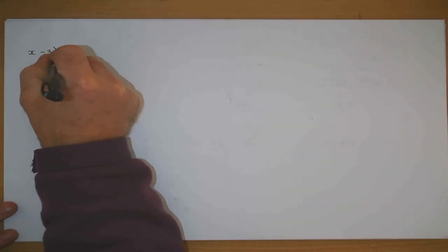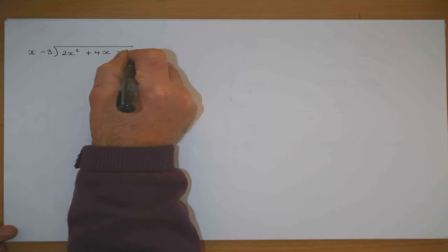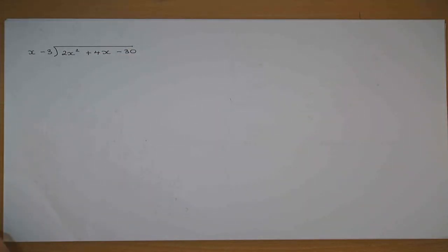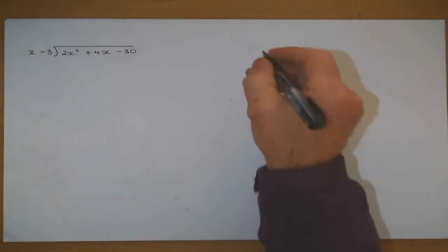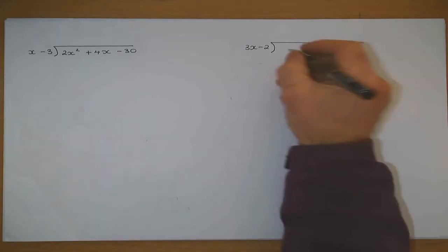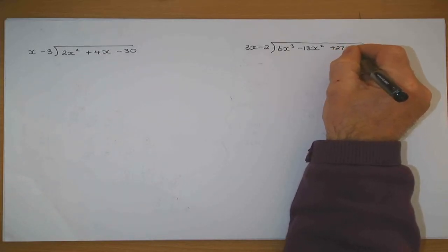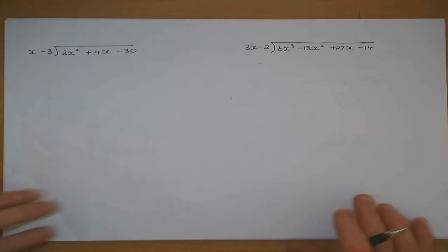I'm going to give you one that's been on a junior short honors paper, so you'll see what would come up. You could get that one. First: x minus 3 divided into 2x squared plus 4x minus 30 — that would be a long division, a simple one. And second: 3x minus 2 divided into 6x cubed minus 13x squared plus 27x minus 4. These are off junior short honors.